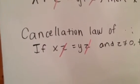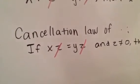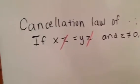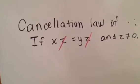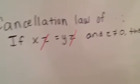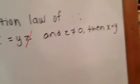Now the second cancellation law is the cancellation law of multiplication. This is if xz equals yz and z does not equal 0, then x equals y.